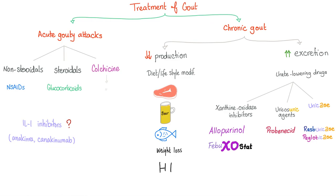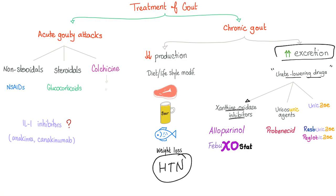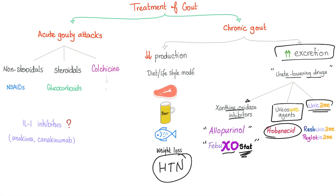To increase excretion, we use urate-lowering therapy. Options include xanthine oxidase inhibitors such as allopurinol and febuxostat, uricosuric agents which excrete uric acid in the urine, and uricase — an enzyme that destroys and degrades uric acid — with two options: rasburicase and pegloticase.